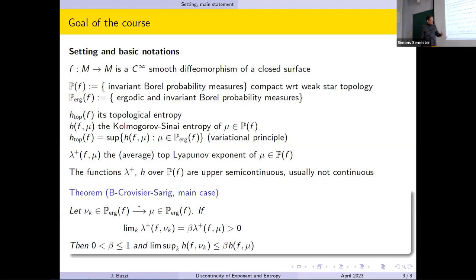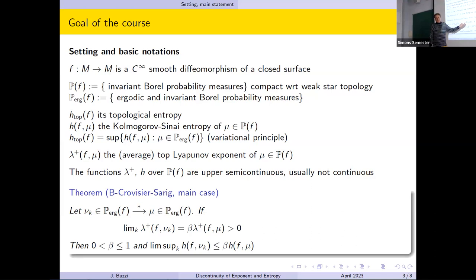What is known either from the basics of the theory or from the Young-Bin theory is that in our setting, the entropy of a measure and the top exponent of a measure are upper semi-continuous but not continuous. So we are investigating the defect of semi-continuity and the absence of lower semi-continuity. I'm focusing on the main case of the joint result with Sylvain Crovisier and Omri Sarig, which is when we are considering a sequence of ergodic measures. By compactness, you can assume that they converge.